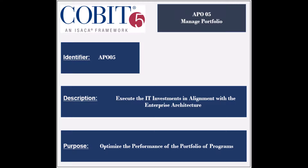Programs and services should be prioritized in alignment with the business objectives, and the selected programs should be executed. The performance of those programs and services should be monitored, and adjustments should be made as seen necessary. The purpose of this process is to optimize the performance of the portfolio of programs.